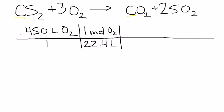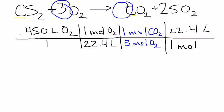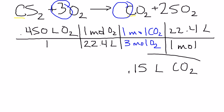Our mole ratio here is going to be a little bit more complicated than the last problem. We've got 3 moles of oxygen for every 1 mole of carbon dioxide. So our mole ratio is 3 moles of oxygen down here and 1 mole of carbon dioxide up there. That's going to give us a little bit of a different type of answer. Our last step is to multiply by 22.4 liters over 1 mole. Our answer should be 0.15 liters of carbon dioxide.